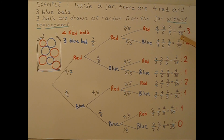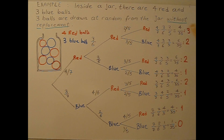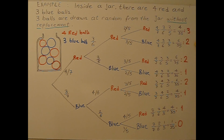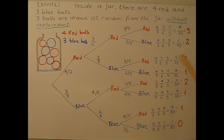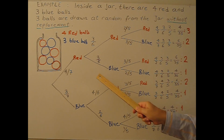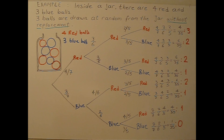After simplifying, the branch probabilities are: red, red, red = 4 over 35; red, red, blue = 6 over 35; red, blue, red = 6 over 35; red, blue, blue = 4 over 35. The pattern continues for all branches starting with blue as well.